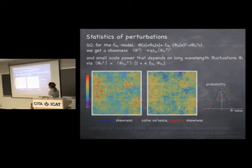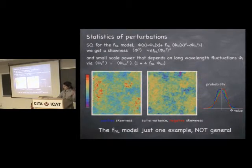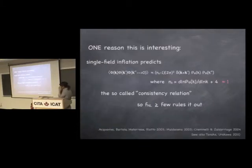So just a quick summary: this type of non-Gaussianity gives you a skewness which wasn't present in the Gaussian case, and another effect is that there's a correlation between the small-scale power and the long wavelength fluctuations. This is just one example — it's not particularly general. It's simple: there's just one parameter, f_NL.